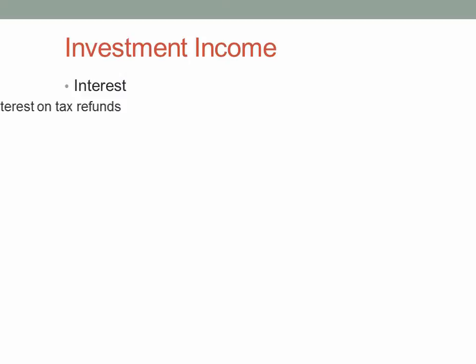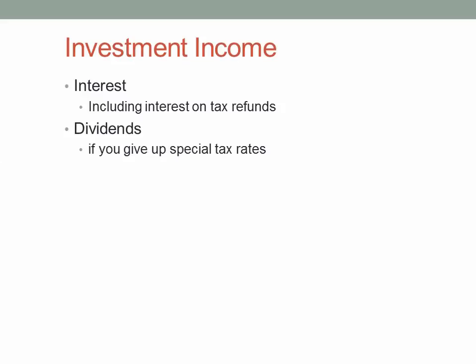Investment income includes interest — including interest on tax refunds — and any kind of dividends whether they're qualified or not. But if you want to count qualified dividends for this calculation, you have to give up the preferential rate. The same applies to capital gains, which also have preferential rates some of the time. So you have a choice: take the deduction offsetting income that would have had a special tax rate, or defer the deduction to the future. If a taxpayer believes that rates are going up, they may feel it's important to defer. Others living hand-to-mouth want to minimize taxes this year.